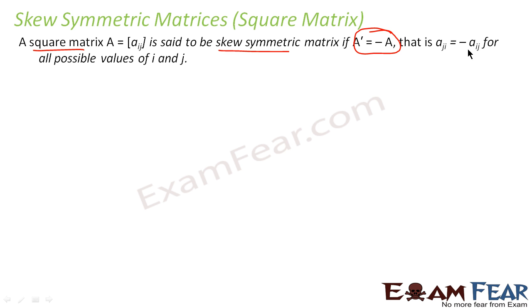The element a_ji equals minus a_ij. So in case of symmetric matrices, A transpose equals A. In case of skew symmetric, A transpose equals minus A. Please remember this: symmetric has A transpose equals A.